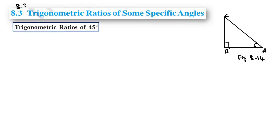Section 8.3 covers trigonometric ratios of some specific angles. We are going to find them, starting with the trigonometric ratios of 45 degrees.